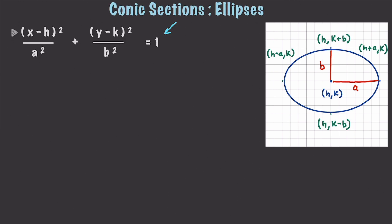If you have a value for a that is greater than b, then the ellipse is going to be horizontal. If b is greater than a, then it will be vertical. And what happens if they are equal? Well, of course that would be a circle, which is completely different.